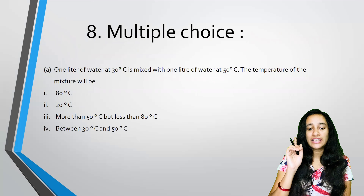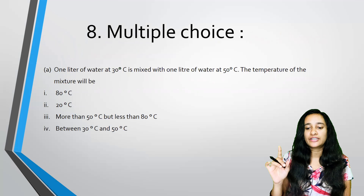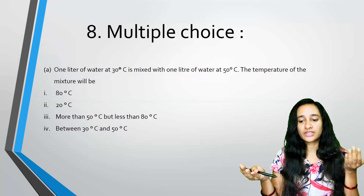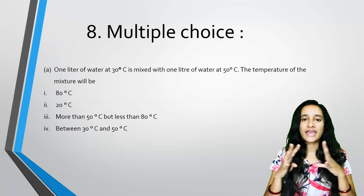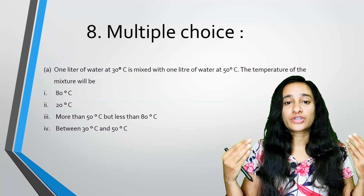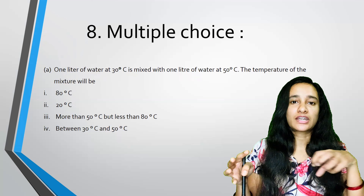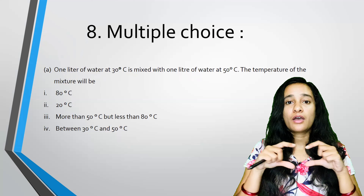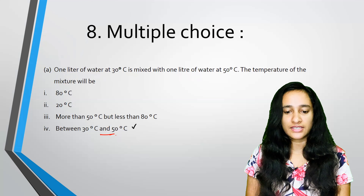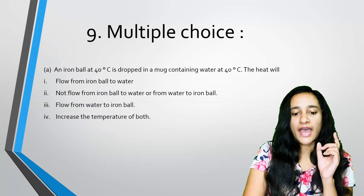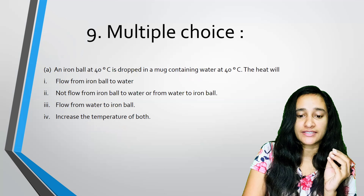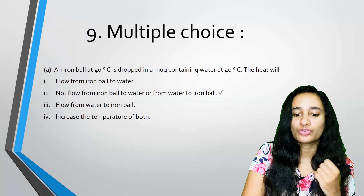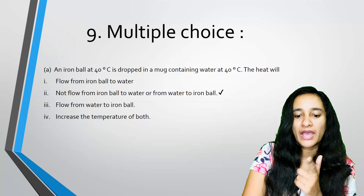Multiple choice: one liter of water at 30 degrees Celsius is mixed with one liter of water at 50 degrees Celsius — the temperature of the mixture will be between 30 and 50 degrees Celsius. An iron ball at 40 degrees Celsius is dropped in a mug containing water at 40 degrees Celsius — since the temperature is the same, heat will not flow from the iron ball to the water or from the water to the iron ball.